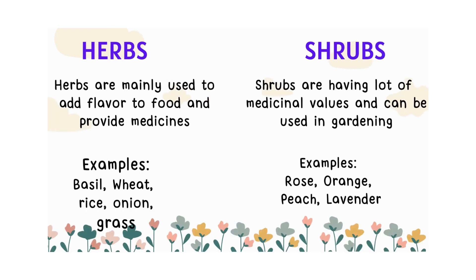Herbs are mainly used to add flavor to food and provide medicines. Shrubs have a lot of medicinal values and can also be used in gardening.